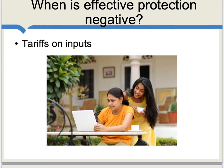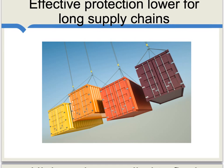The simplest way to think about a negative rate of effective protection is to think about tariffs on inputs. Say a country puts tariffs on computers — computers help produce a lot of goods and services. It could be the case that producer surplus is falling after the tariff, and that would be a negative rate of effective protection. Because tariffs on useful inputs lower the rate of effective protection, that means the rate of effective protection is generally lower when there are long supply chains and tariffs applied at various points along that chain.